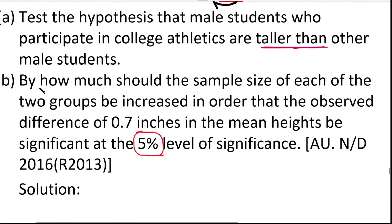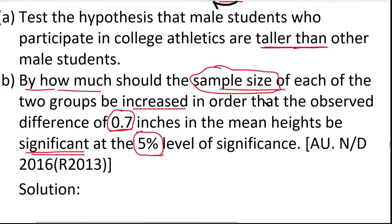Now for part two: by how much should the sample size of each of the two groups be increased so that the observed difference of 0.7 inches in mean heights is significant at the 5% level of significance? In part one, we concluded mu1 = mu2, meaning there is no significant difference between the two population means with n = 50.